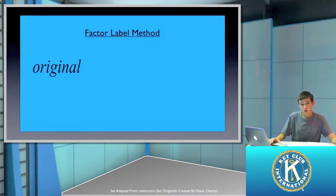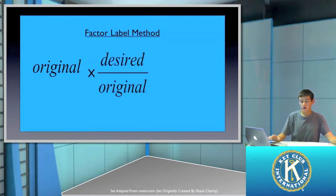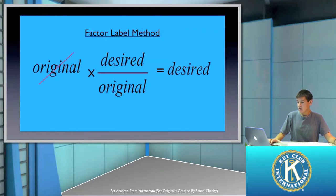So, for example, we start with our original units, and as you can see, we have our conversion. We have our ratio between our original units and our desired units. What ends up happening is that since the original units are diagonal from each other, which is ultimately what we want to do when we cancel them out, they're going to cancel out, leaving us with our desired units, which is what we want.